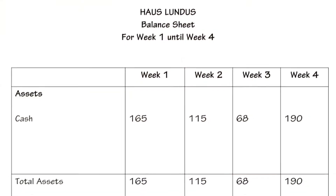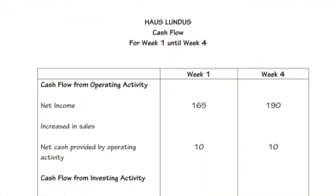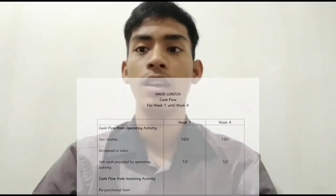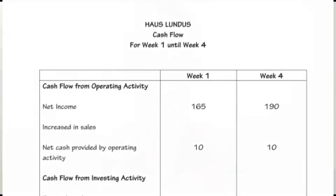I will continue to present the financial plan, which is the balance sheet and cash flow. For the balance sheet, we have total assets of 165 ringgit for week 1, 115 ringgit for week 2, 68 ringgit for week 3, and 190 ringgit for week 4. For cash flow, we have cash flow from operating activity with a net income of 165 ringgit for week 1 and 190 ringgit for week 4. We also have net cash provided by operating activity of 10 ringgit for week 1 and week 4.